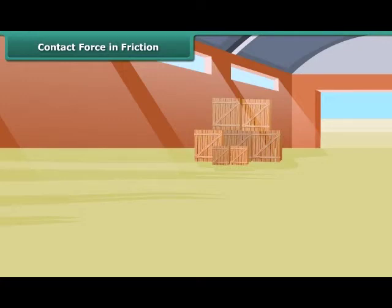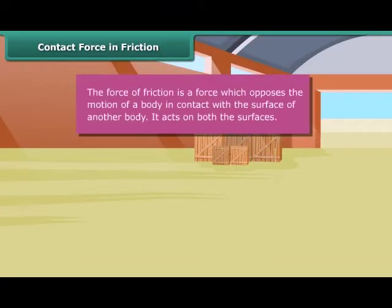This example proves that friction depends on the amount of contact force pushing the two surfaces together. The force of friction is a force which opposes the motion of a body in contact with the surface of another body. It acts on both surfaces.